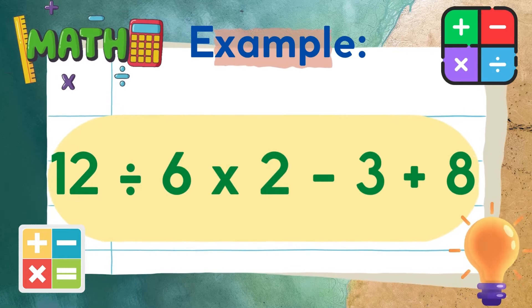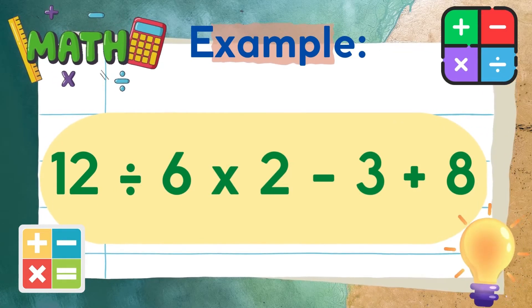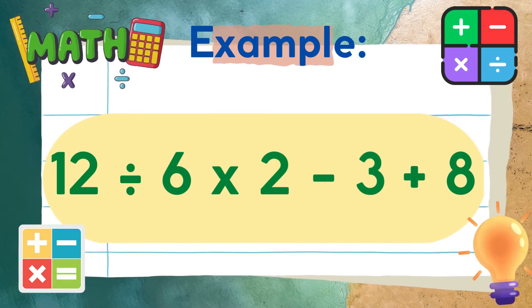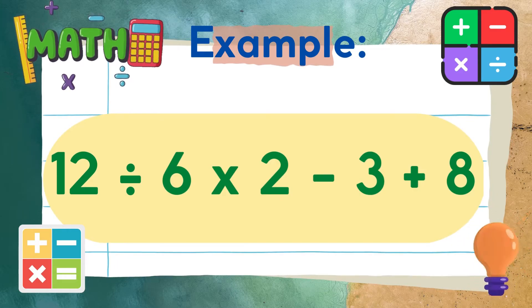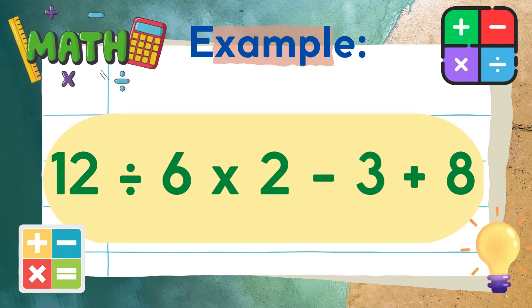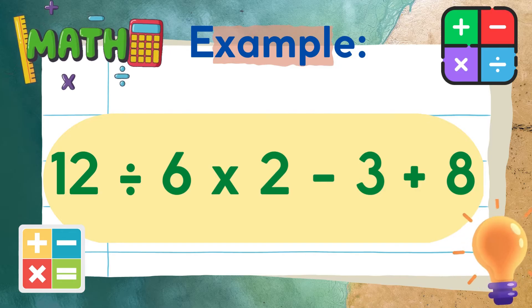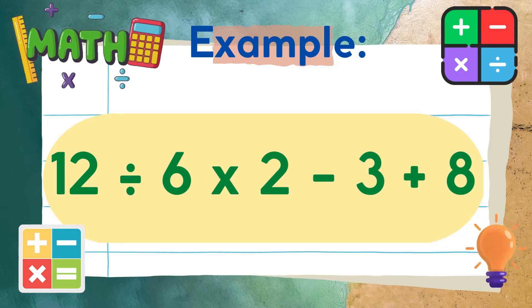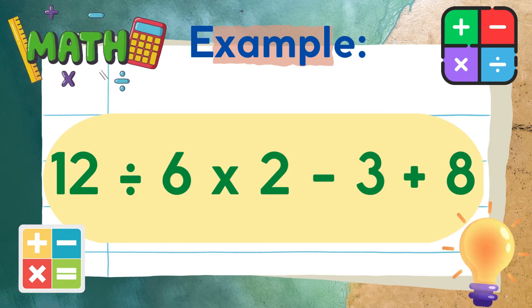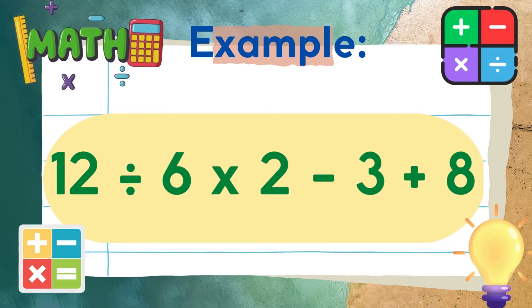Let's have this example: 12 divided by 6 times 2 minus 3 plus 8. Remember that whichever operation, either multiplication or division, comes first from left, it should be performed first. In this case, we need to divide first before we multiply.